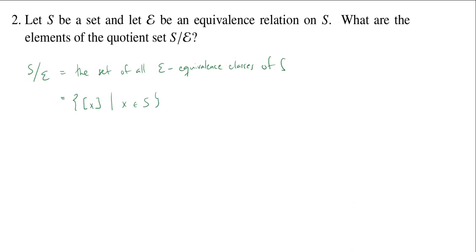Remember our notation here for the equivalence class of an element is we just put square brackets around it. This would tell us we take every single element of S, we form its equivalence class, we take the set of all those.